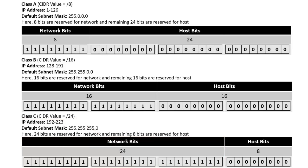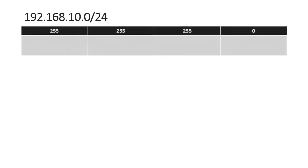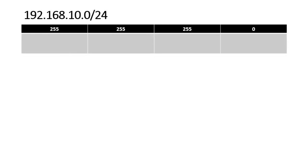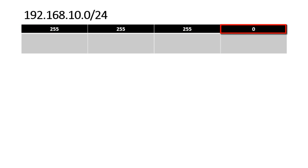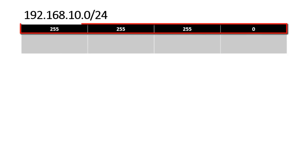Let's take an example to clear the concept. Here we have 192.168.10.0 with the CIDR value /24. It is a Class C IP address because it starts from 192, and its default subnet mask is 255.255.255.0.